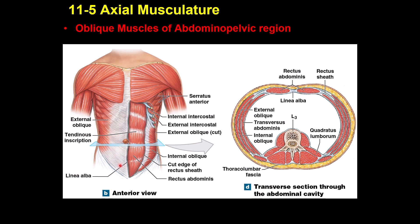There is fascia in this area, and deeper to that you have the rectus abdominis. These are called tendinous inscriptions, and this is the six-pack muscle. Lateral to that you have another muscle called the internal oblique.